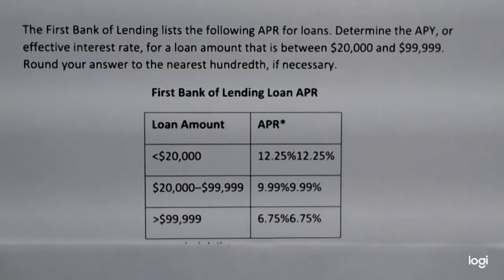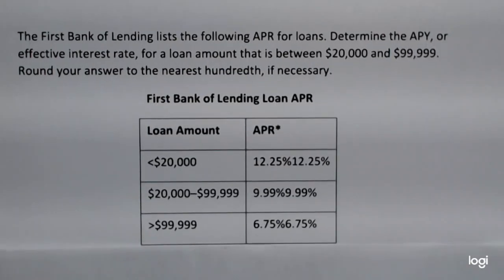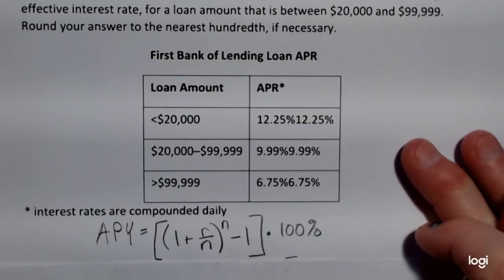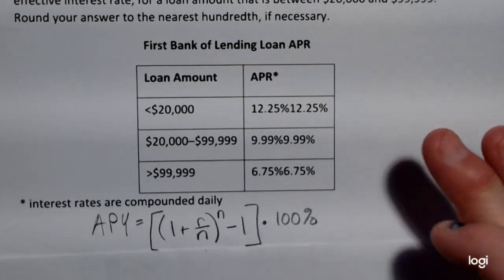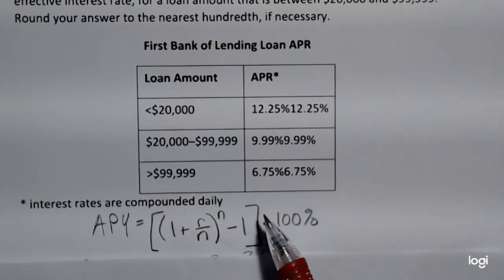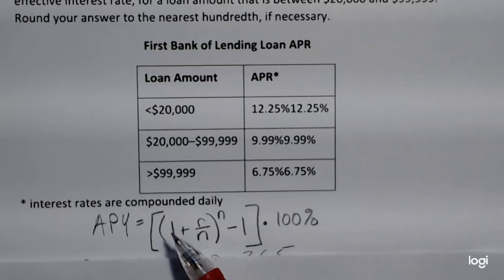I want to use the annual percentage yield formula. That formula is not too bad. The APY is given by, in large parentheses, 1 plus r over n, raised to the nth power, minus 1.